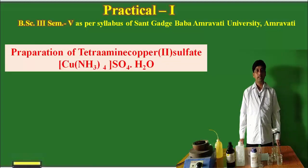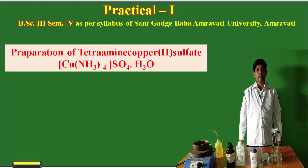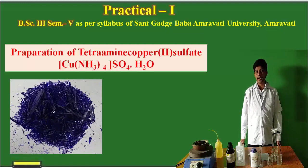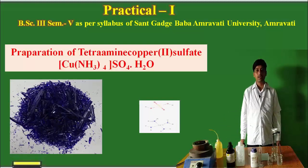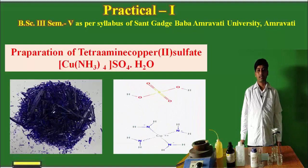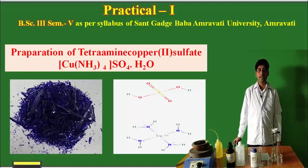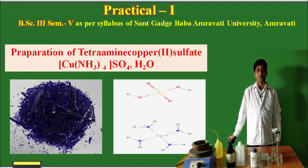Today we will see the practical of preparation of tetramine copper two sulphate. I will now demonstrate the practical — that is, preparation of tetramine copper two sulphate. The copper tetramine sulphate are dark blue coloured crystals. This is the structure of copper tetramine sulphate complex. Now we will see the demonstration of how we will prepare this tetramine copper sulphate.